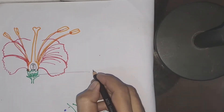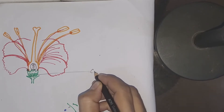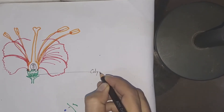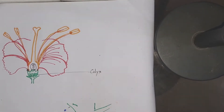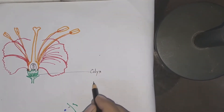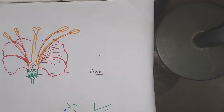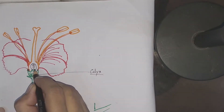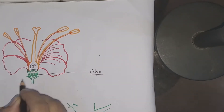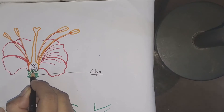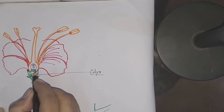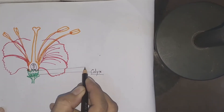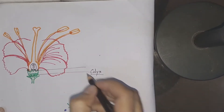Now let us label the different parts. This part is the calyx, which covers the whole flower when it is in the form of a bud. The individual part of the calyx is known as a sepal.